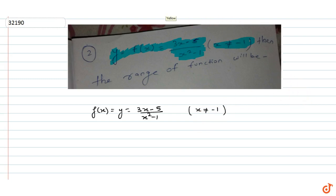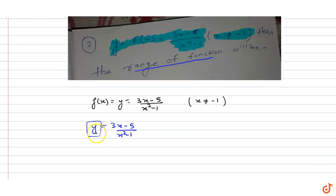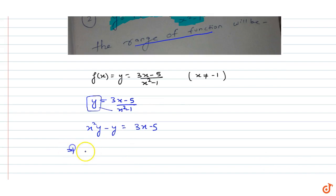We can say that y = (3x - 5)/(x² - 1). The range of function means what values of y are possible. If we cross multiply, we get x²y - y = 3x - 5. Rearranging, we get x²y - 3x + 5 - y = 0.